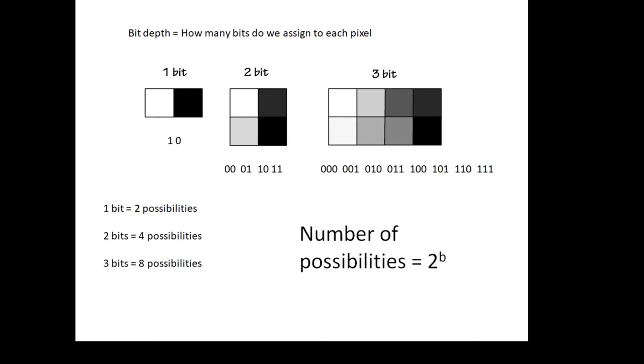If I had three bits per pixel, there are eight possibilities. I can have a three-bit binary code for different shades of gray. A very important equation: the number of possibilities equals two to the b, where b is the bit depth.